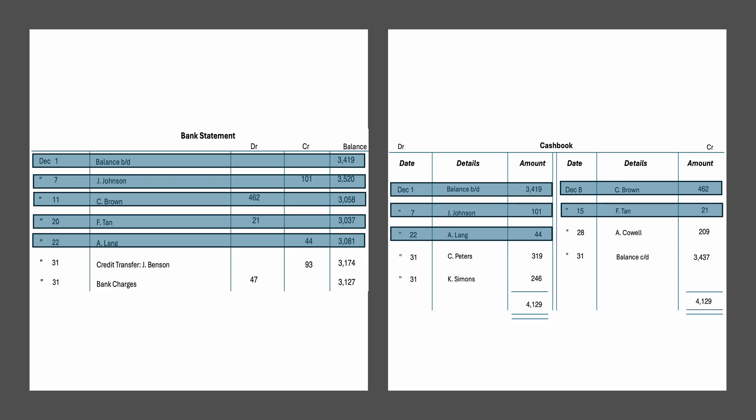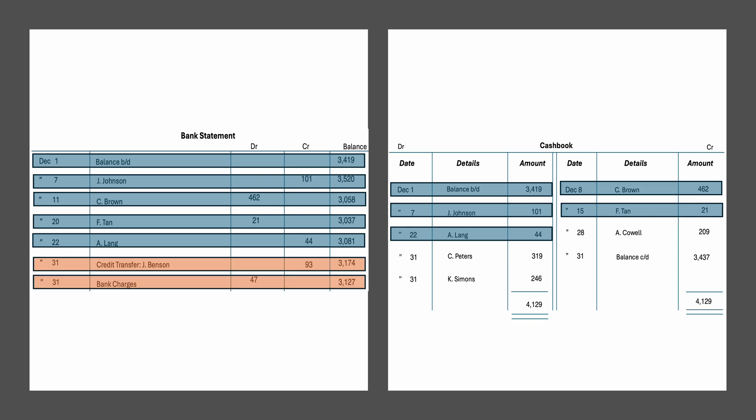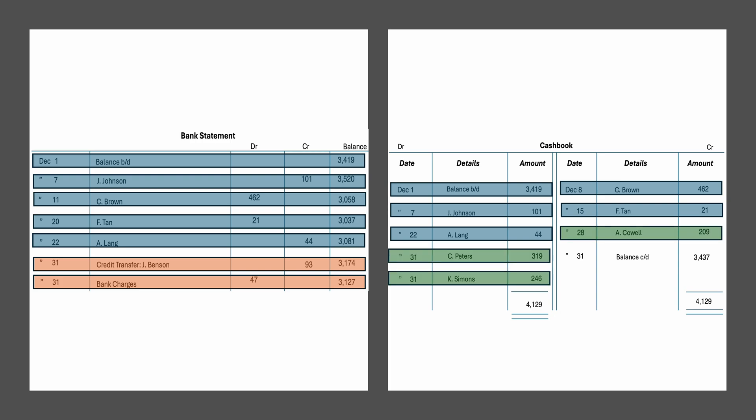The bank statement also shows that a check was received from A-Lang, and the cash book shows the same. So far we have identified the transactions that appear on both documents. However, the transactions highlighted in orange only appear on the bank statement but are not recorded in the cash book, while those highlighted in green are recorded in the cash book but not on the bank statement.